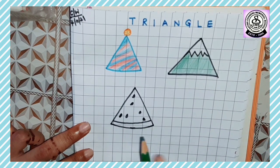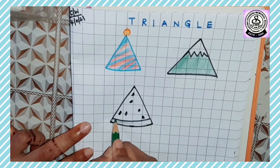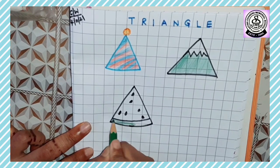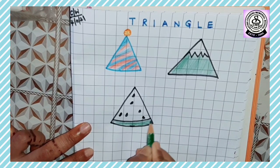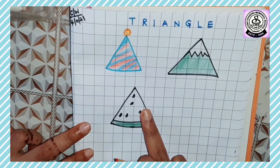As watermelon outer color is green, right, so fill this part with green color. Okay, and then inside we fill it with red color. Okay, so watermelon is done.